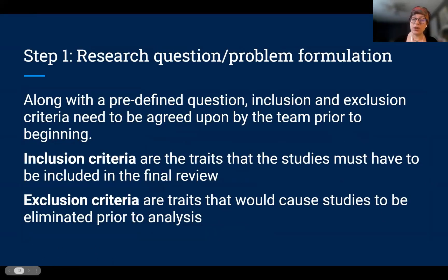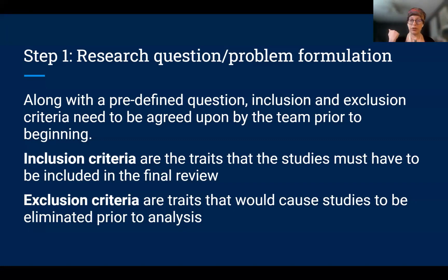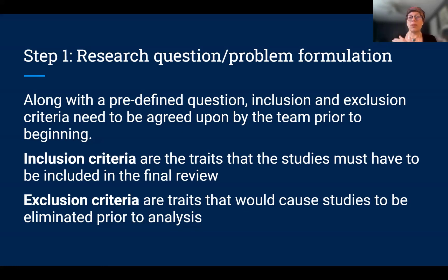Along with the predefined question, the most important part of the protocol is defining your inclusion and exclusion criteria explicitly. This allows the librarian to search more effectively, and when you go to evaluate articles you'll know which ones to keep moving forward to analysis and which to eliminate. Inclusion criteria are the traits articles must have — any article in the final product needs all inclusion criteria met. Exclusion criteria are anything whose presence means you would not use that article.